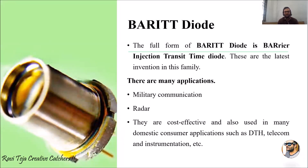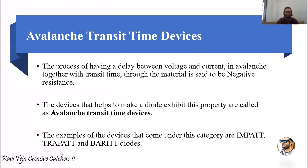The BARITT diode — full form: Barrier Injection Transit Time diode — is one of the latest inventions in the avalanche transit time devices family. These are used in military communications and radars, and as they are very cost effective, they are also used in domestic consumer applications such as DTH, telecom, and instrumentation. All three diodes fall under avalanche transit time devices, exhibiting a delay between voltage and current and proving the concept of negative resistance.